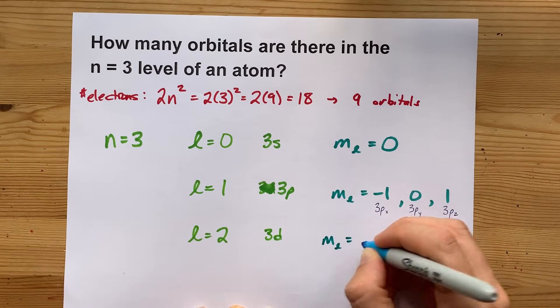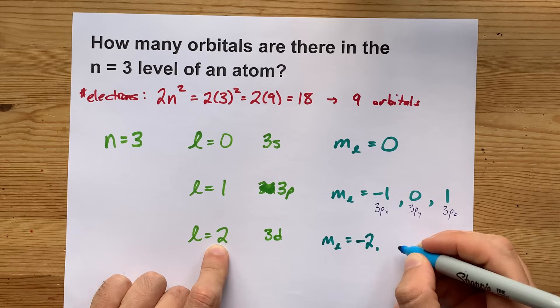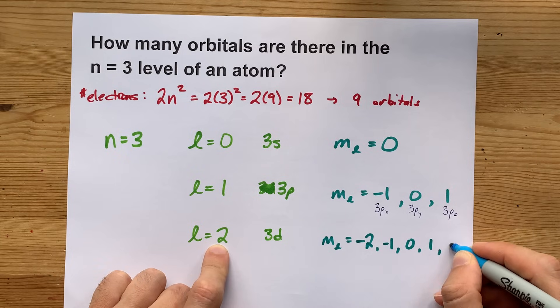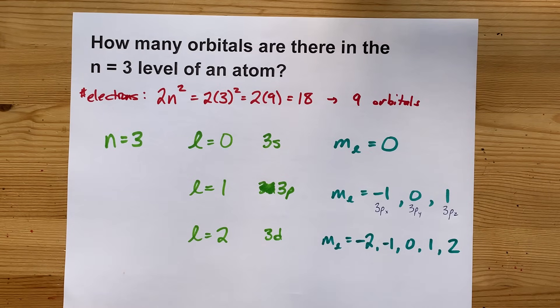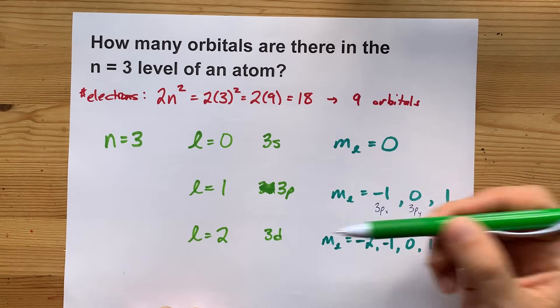The MLs for L equals 2 start at negative 2 and count all the way up to positive 2. All these quantum number rules might be making sense now. And this tells you that there are five orbitals in the 3d subshell.